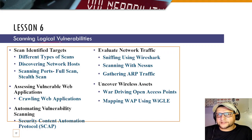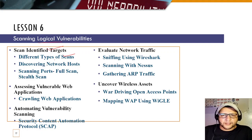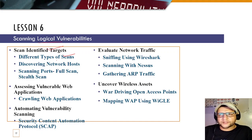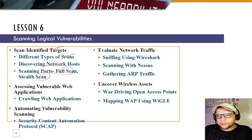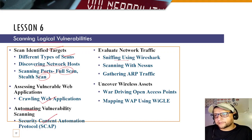Lesson 6 teaches scanning logical vulnerabilities — identifying targets using different Nmap scan types such as null scan, Christmas scan, SYN scan, full scan, and half scan. You'll discover network hosts, scan ports, assess vulnerable web applications, crawl web applications, automate vulnerability scanning using SCAP protocol, check network traffic, sniff traffic with Wireshark and Nessus, and gather ARP traffic.